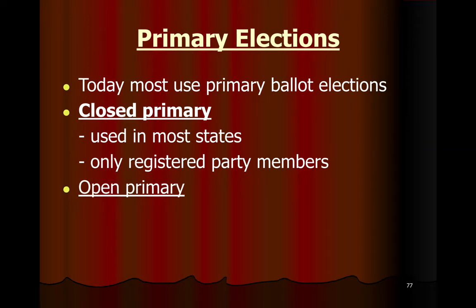The second most popular type is referred to as an open primary, which lets people registered as independents vote in one primary — but you would have to pick either the Republican or the Democratic. One benefit of an open primary is that, because so many people are registered as independents and tend to be more moderate, allowing moderate liberals and moderate conservatives to participate produces candidates more appealing to a broad range of voters. If you close the primary, only the most liberal and conservative voters elect candidates, which is why we often hear people say they don't like either candidate — those candidates tend to be more extreme than the average, more moderate voter.